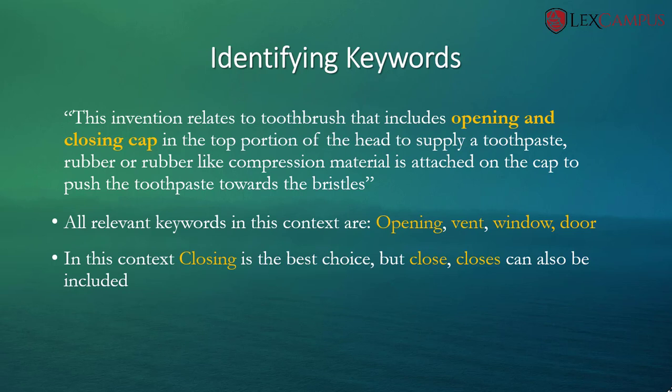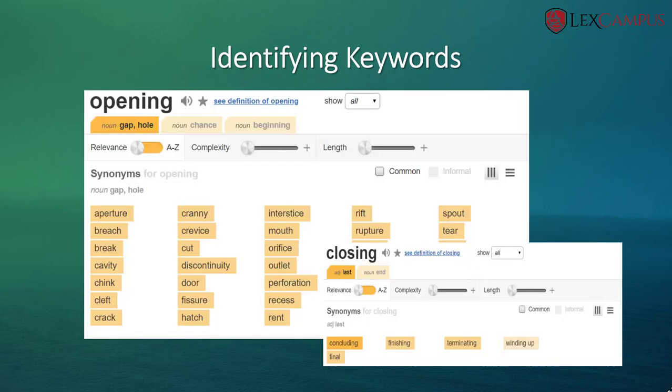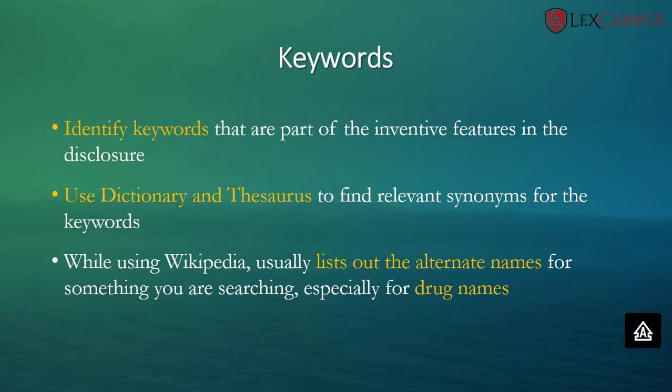I need to mention how I came up with these keywords and synonyms — by using the dictionary. Identify keywords that are part of the inventive features in the disclosure, and one can use either a dictionary or thesaurus to find relevant synonyms. Alternatively, one can also use Wikipedia to get up to speed on anything you are searching for, especially in the case of drug names, where it usually lists alternate names.